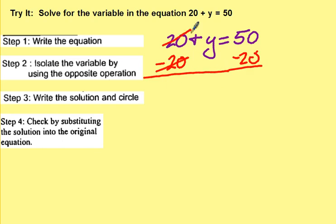Positive 20 and a negative 20 will cancel each other out, leaving y on this side alone. 50 minus 20 is 30.